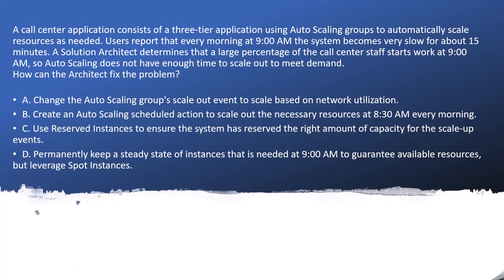The question says: a call center application consists of a three-tier application using auto-scaling groups to automatically scale resources as needed. Users report that every morning at 9 a.m., the system becomes very slow for about 15 minutes. A solution architect determined that a large percentage of the call center staff start work at 9 a.m., so auto-scaling does not have enough time to scale out to meet the demand.